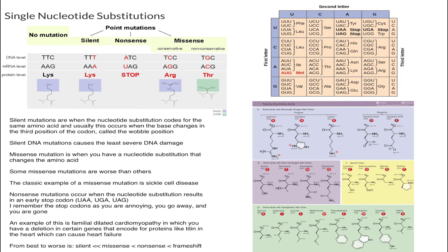Nonsense mutations occur when the nucleotide substitution results in an early stop codon. The stop codons are UAA, UAG, and UGA — I remember these as 'you are annoying,' 'you go away,' and 'you are gone.' An example is familial dilated cardiomyopathy, where a deletion in genes encoding proteins like titin — a protein in the heart — causes heart failure.